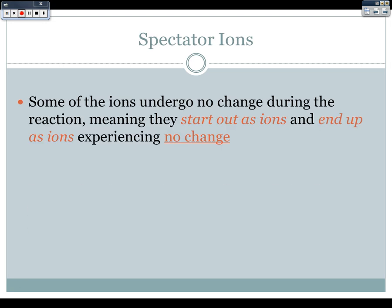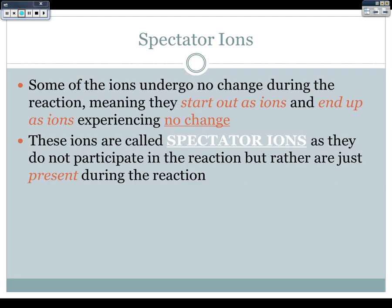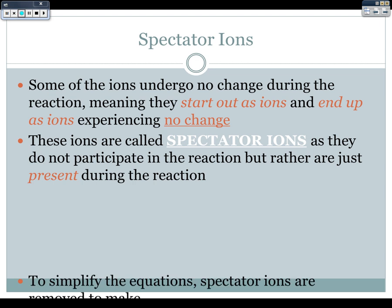Let's talk about spectator ions. Some ions undergo no change during the reaction — they start out as ions and end up as ions, experiencing no change in phase. These ions are called spectator ions, as they do not participate in the reaction directly but are just present during it. They're like spectators at a sporting event — they watch, they do not interact. Spectator ions are removed to make net ionic equations, which show just what actually experiences a change.